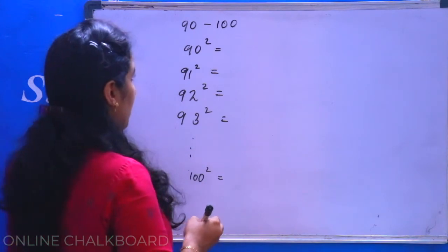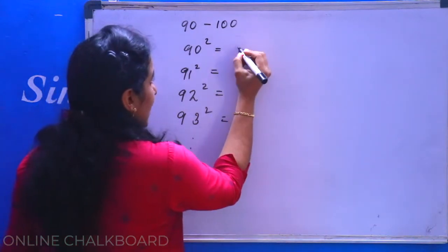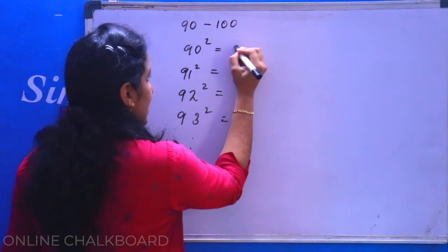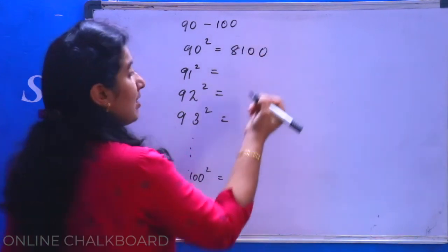Let's see here, here we go. 90 square is 81 and 2 zeros, 8100.